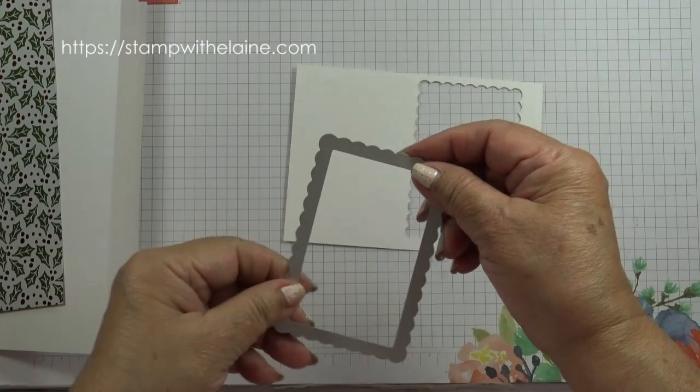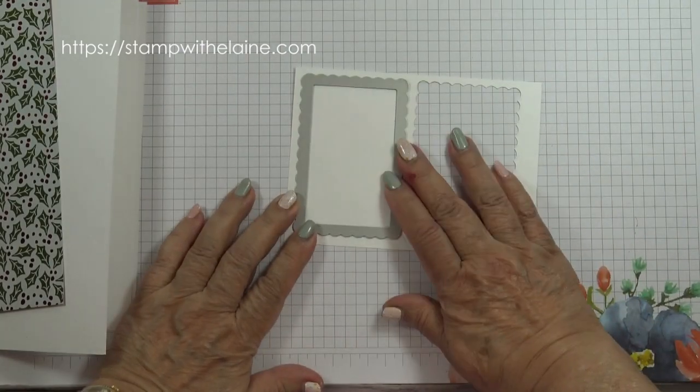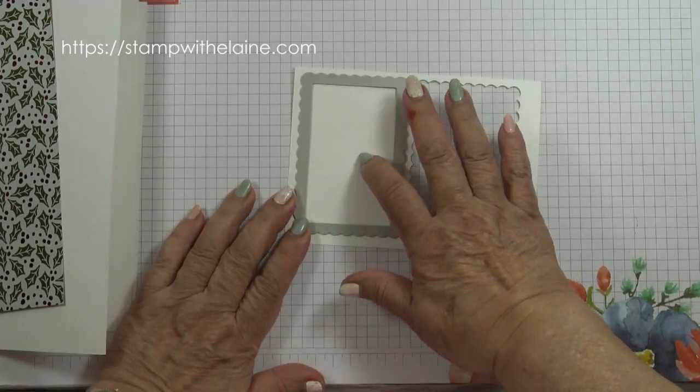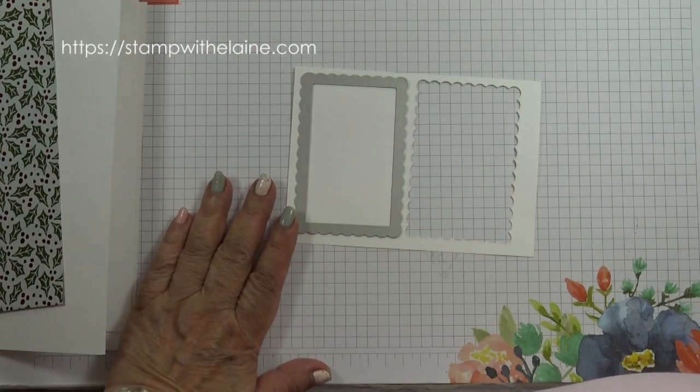Also need a scrap of basic white to stamp and die cut the contour die for the front of the card.